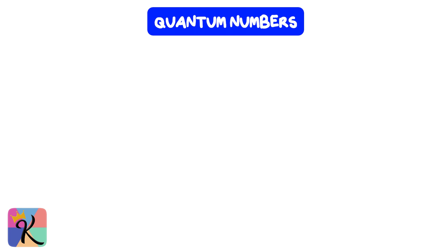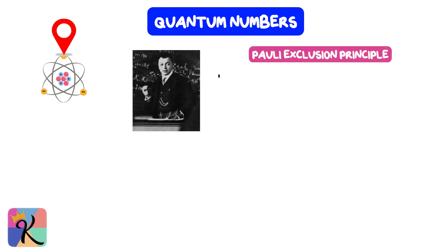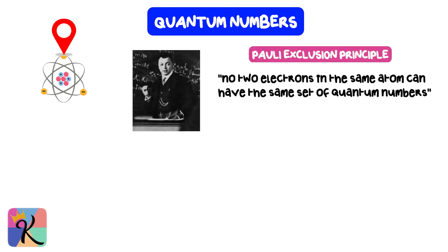Quantum numbers are a set of four values that describe the unique position of an electron within an atom. According to the Pauli exclusion principle, no two electrons in the same atom can have the same set of quantum numbers. The four quantum numbers are: